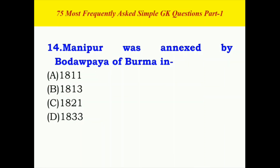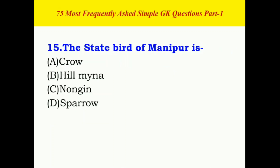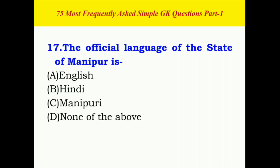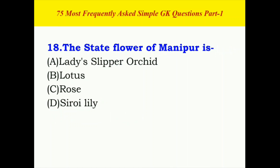What was the name of Tamanglong district earlier? The correct answer is B. Manipur was annexed by Bodawpaya of Burma — the correct answer is B. The state bird of Manipur — the correct answer is C. How many seats are allocated to Manipur in Lok Sabha? The correct answer is A. The official language of the state of Manipur — the correct answer is C. The state flower of Manipur — the correct answer is D.